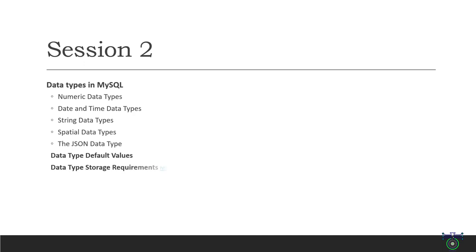After that, we will take a look at string data types like char, varchar, text, and blob, which are used to store character string values. We will also explore spatial data types such as point, line, and polygon, which are used to store geographical information.